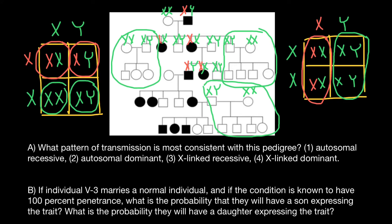His mother is affected, so we know she got one defective X chromosome from her father and a normal X chromosome from her mother. Her son got the defective X chromosome from the mother's side and the normal Y chromosome from the father's side. Building the Punnett square for this affected male and an unaffected female, the probability of having a son with this trait is zero, and the probability of having a daughter with this trait is 100%.